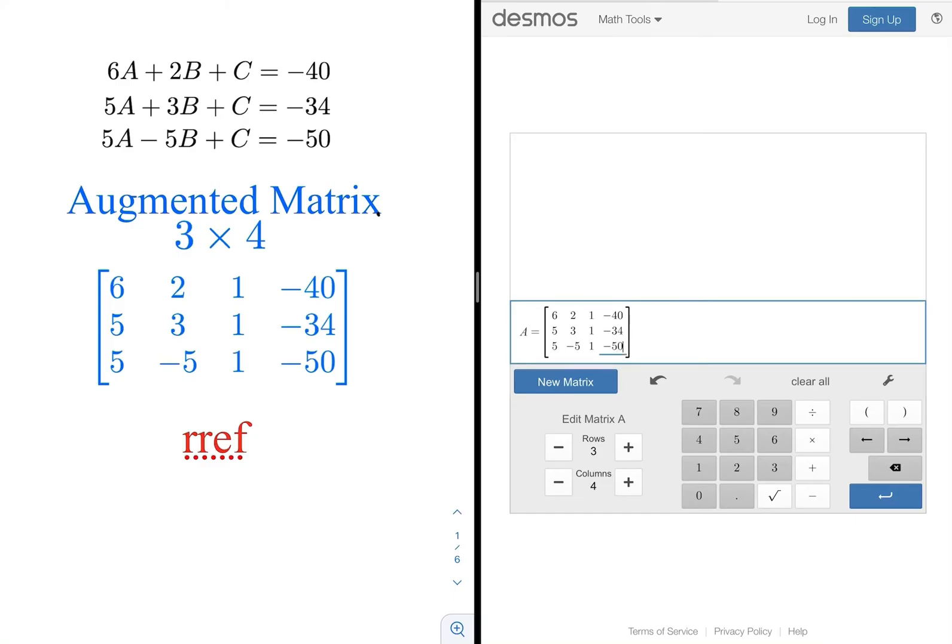I'm just going to double check that my matrix is correct so I'm going to read just across the top: 6, 2, 1, negative 40. Okay, 5, 3, 1, negative 34 and 5 negative 5, 1 negative 50. And you want to make sure that you enter it right because if you enter just one value wrong it's going to throw off the entire answer.